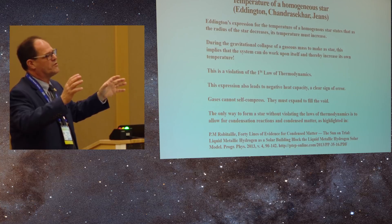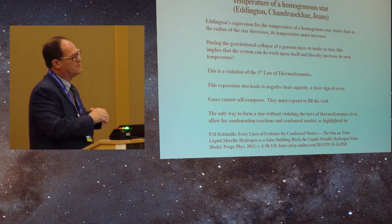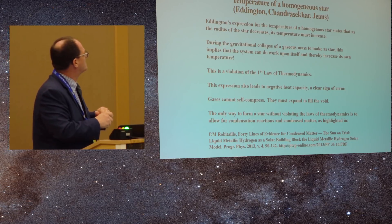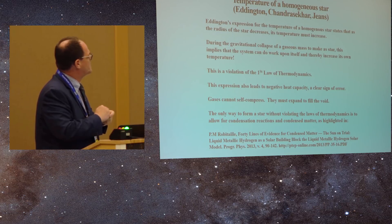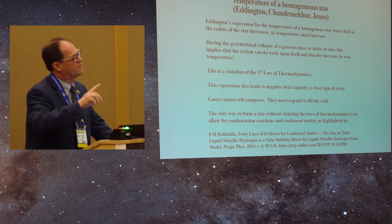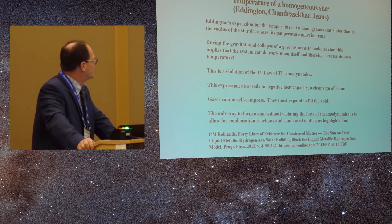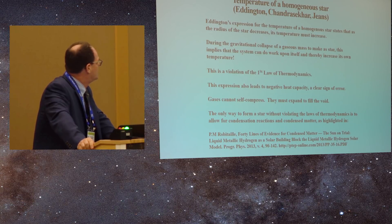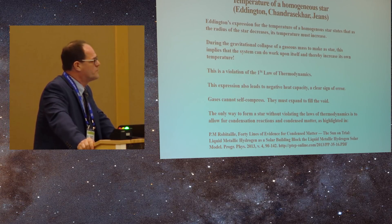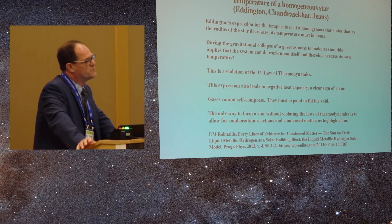So all laws of thermodynamics are being broken. Whereas if you say, okay, now the stars are actually condensed matter, and this is what I've advocated, that the sun is actually made of metallic hydrogen, and you can see this, there's many proofs of this, and in this paper I outline 40 proofs that the sun must be condensed matter.